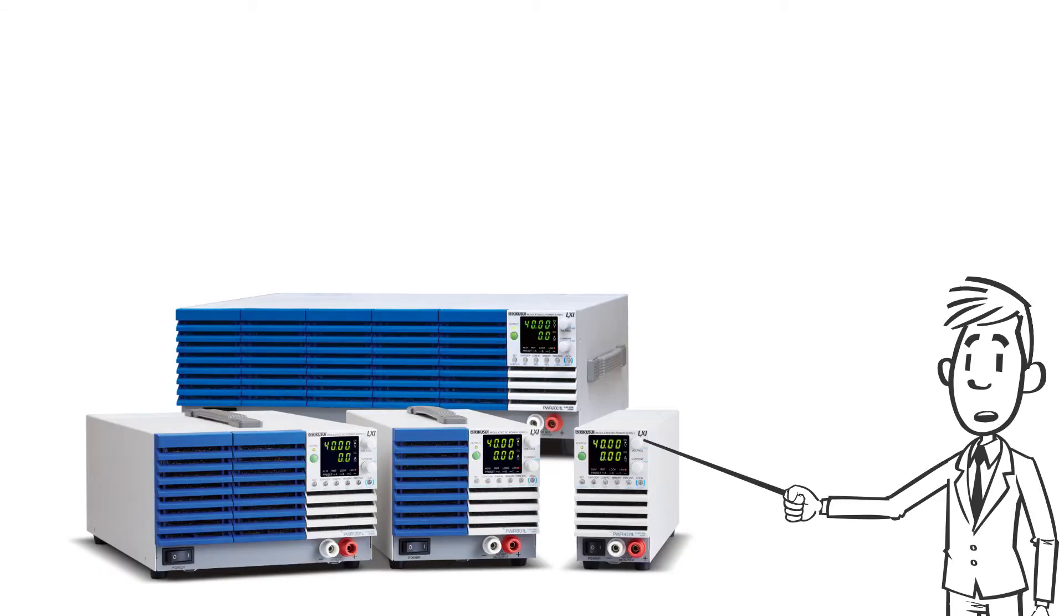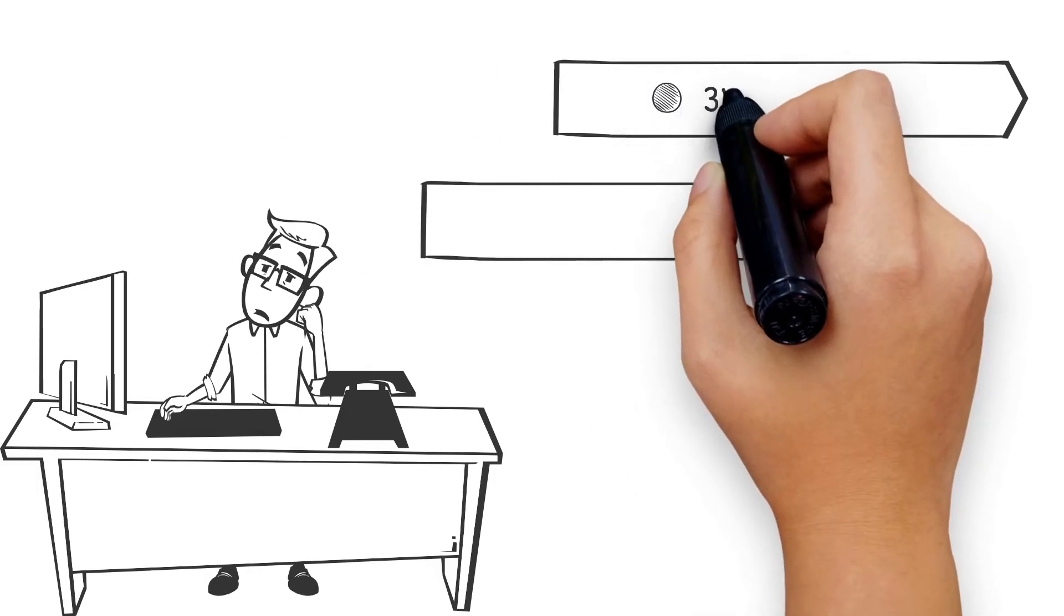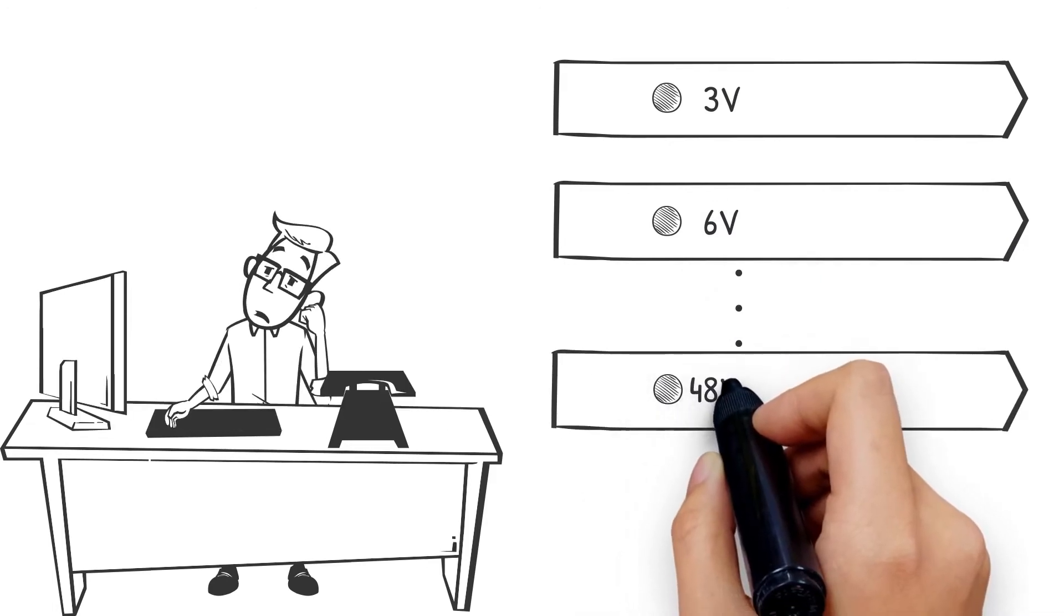DC power supplies exist to meet these types of needs. Since electronic circuits operate on direct current, experiments and tests require a regulated DC power supply. Electronic circuits need specific operating voltages such as 3V, 6V, 12V, 24V, 48V, etc.